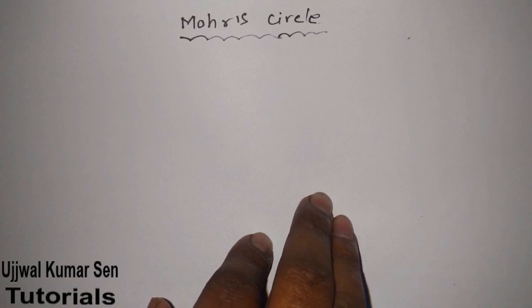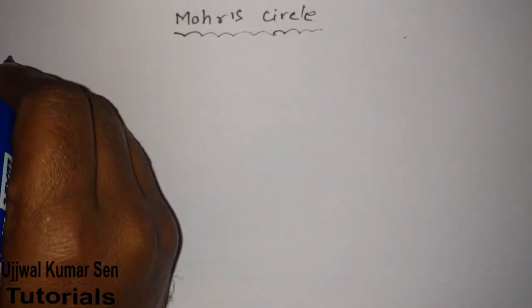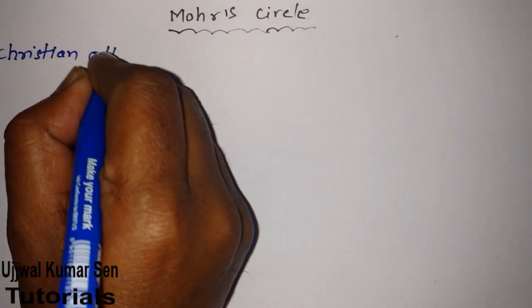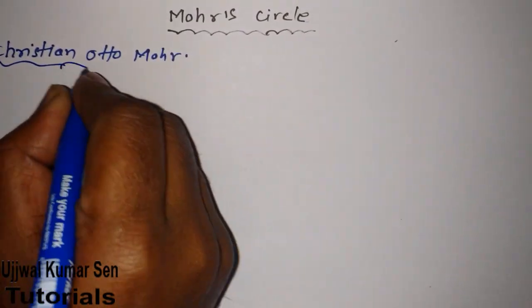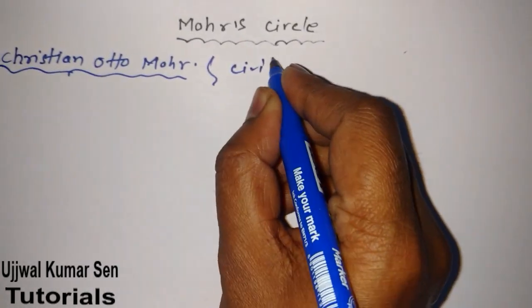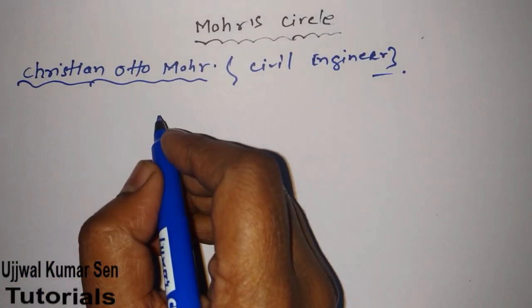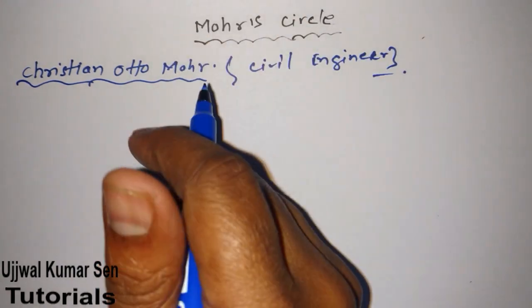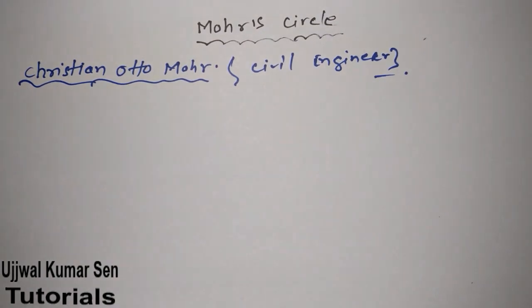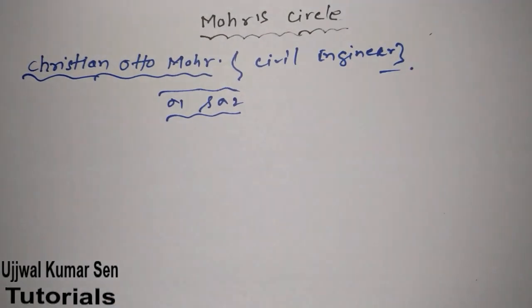Let's talk about who is the person behind Mohr's circle. The name of that person is Christian Otto Mohr. He was a civil engineer and his hobby was to play with graphical things. That is why he found this graphical method for finding out principal stresses. What we are basically going to find out using this circle is sigma one and sigma two.